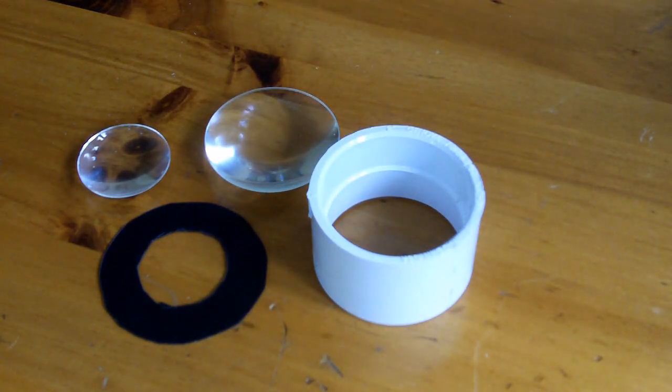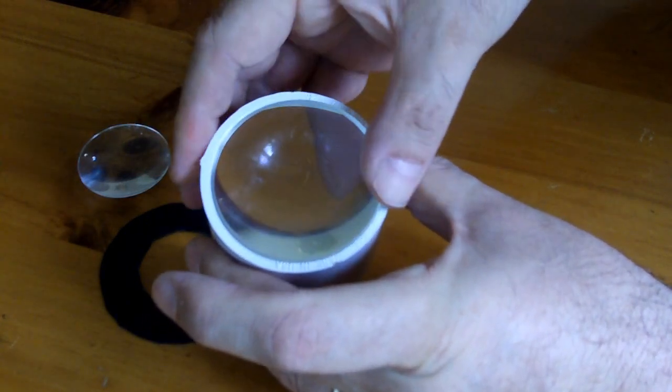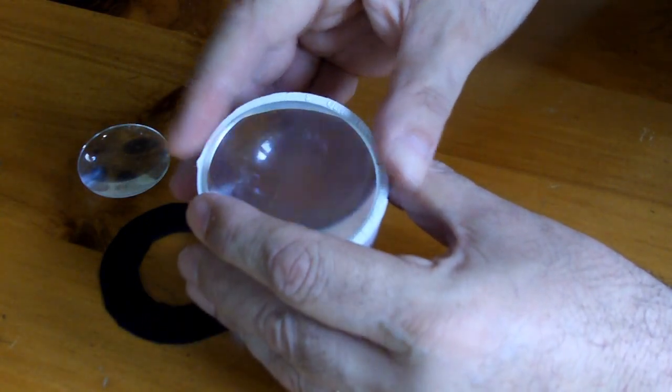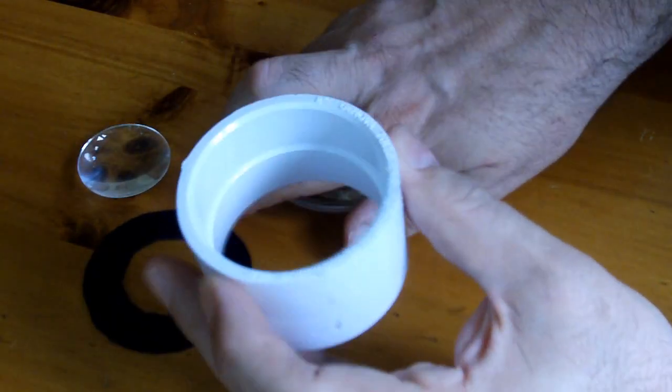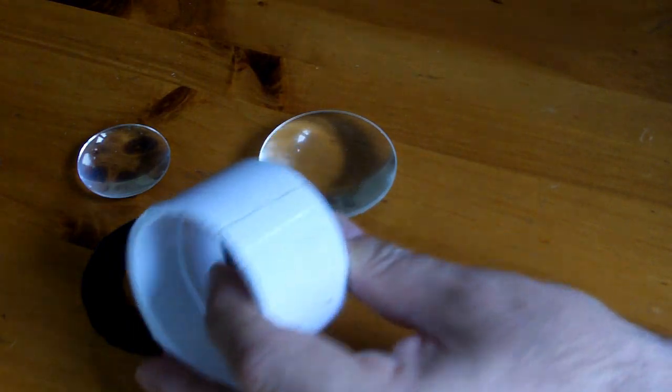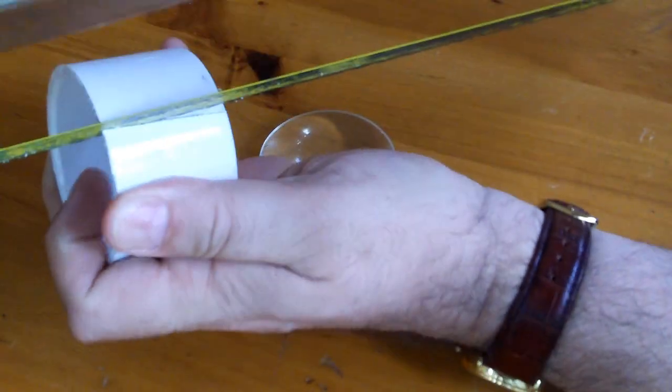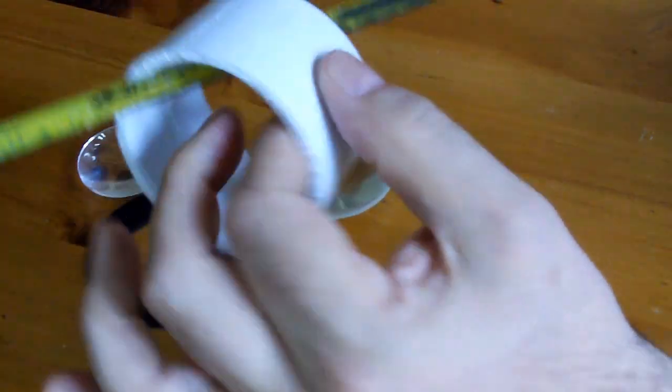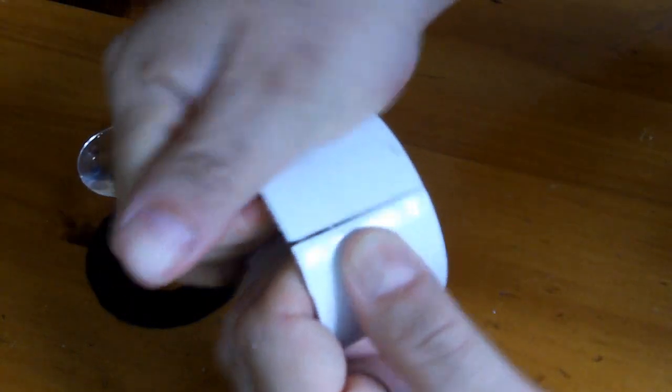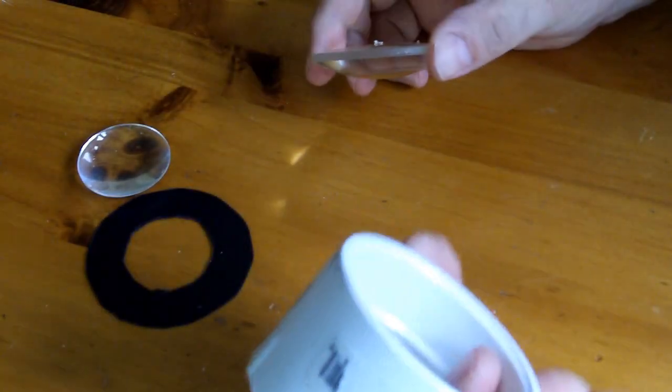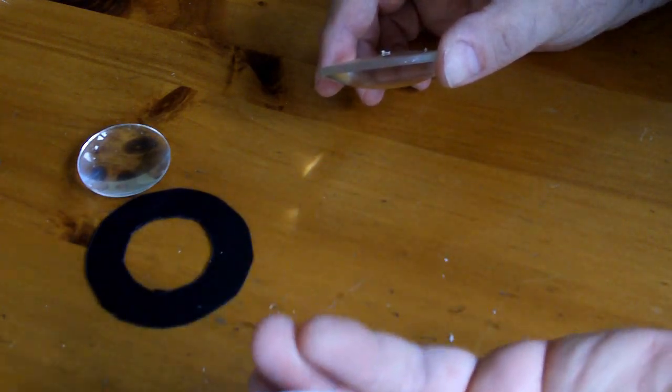What we're going to want to do is insert the larger lens into the PVC coupler. It's a little too small, so what I do is simply saw it open, completely open. So now it expands slightly.